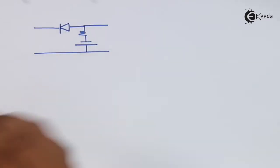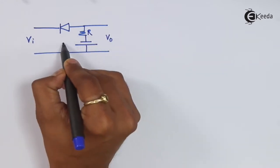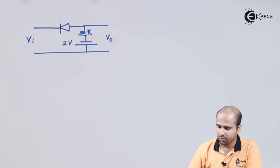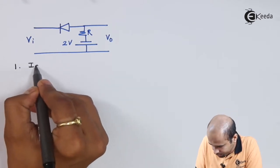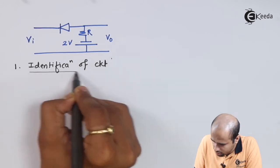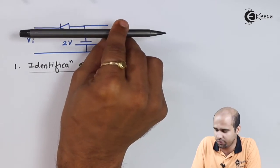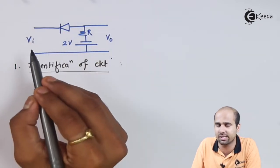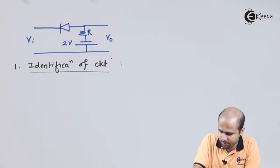The circuit which is given we will redraw — it is a very simple circuit. This is VI, 5 volt peak to peak which is being given. This is resistance R, and this is 2 volts. Mind well, the polarity given is in the reverse way. The first step is identification. As the diode direction goes from input to output, it is a negative clipper; if from output to input, it is a positive clipper. As the diode is in between input and output, it is a series clipper. So this is a series positive clipper.